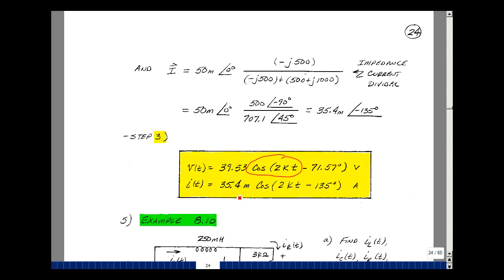Our current was 35.4 milliamps at angle minus 135. We're just going to put the cosine of 2000 T between the two. And that's our result in steady state for the voltage V of T and I of T. And this is an example using parallel equivalents and the current divider.